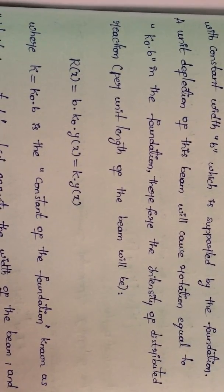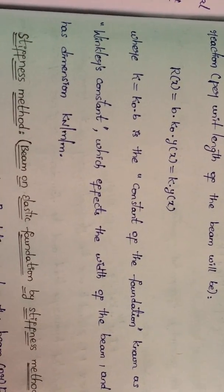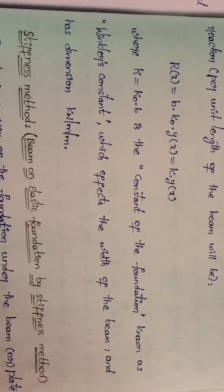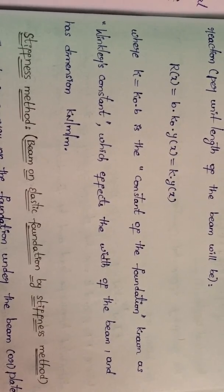Therefore the intensity of the reaction per unit length of the beam will be r of x equal to b into k naught into y of x, is called k into y of x, where k equal to k naught into b is the constant of the foundation known as Winkler's constant which reflects the width of the beam and has dimension kilonewton per meter per meter.